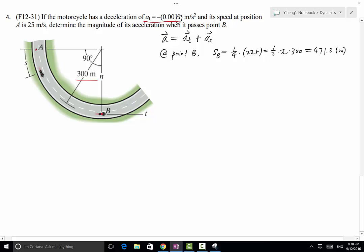Therefore, a_t equals to -0.001 times s at that point s_B, and that equals to -0.001 multiplied by this value right here. So that is going to be -0.4712 in the unit of meter per second squared.